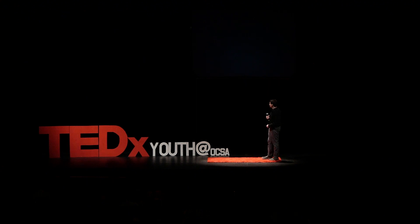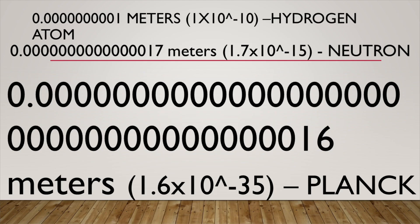Scientists then needed to decide how long these strings are. There's a length associated with quantum gravity called the Planck length, and since it's associated with gravity they made that the string length — and the calculations worked out. The diameter of a single hydrogen atom is about 1×10⁻¹⁰ meters. A single neutron is about 1.7×10⁻¹⁵ meters. But the Planck length is 1.6×10⁻³⁵ meters — trillions of trillions of times smaller than a neutron — and even with high-energy particles, we would never be able to find or observe it.